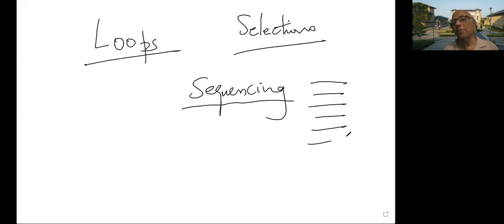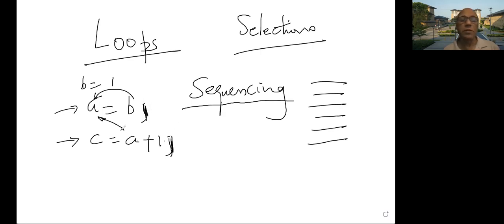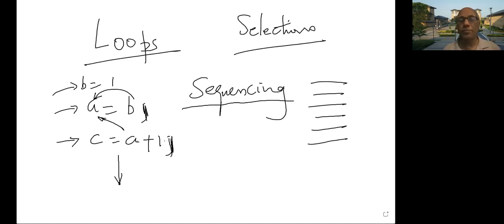For example, a equals b, and then c equals a plus one. So this is the first statement and this is the second. You are storing b into a and then adding one to that. You need to have b initialized too — no semicolons. So you set b to one, use that b and store it into a, use that a to create c, and that is how things progress. You execute line by line — every line is executed. That is called sequencing. Without sequencing, you probably won't have any programs.